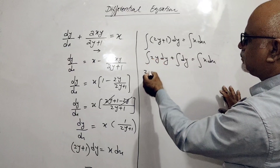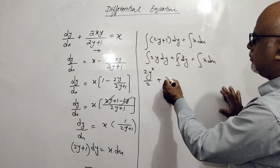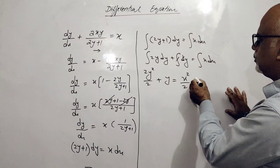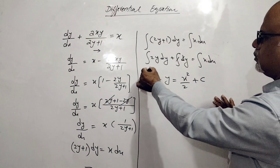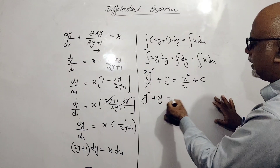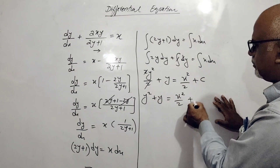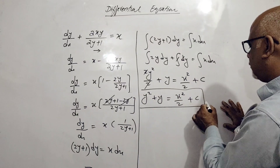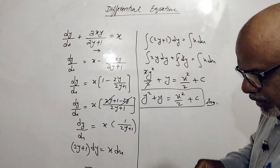Integrating gives us y squared plus y equals x squared over 2, plus c as the constant of integration. The two cancels out, so y squared plus y equals x squared plus c. This is the solution of this differential equation.